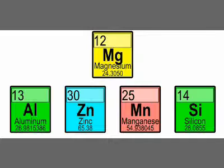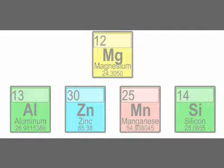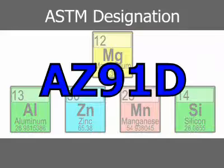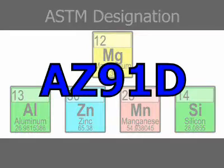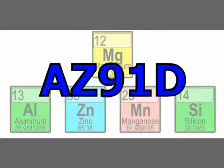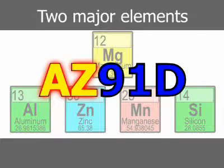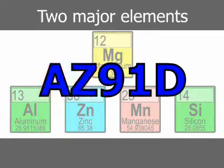The magnesium industry offers several alloys that are widely used for die-casting. They are most commonly designated by a system established by ASTM for all magnesium alloys, which covers both chemical compositions and tempers. The first two positions in the ASTM designation are capital letters representing the two major alloying elements, arranged in decreasing percentages.